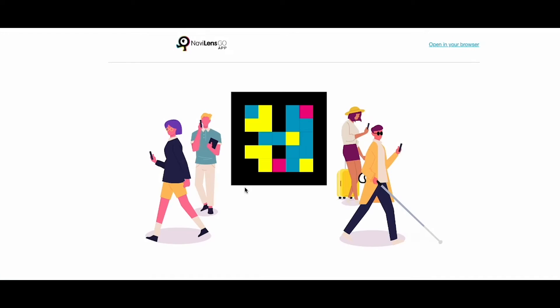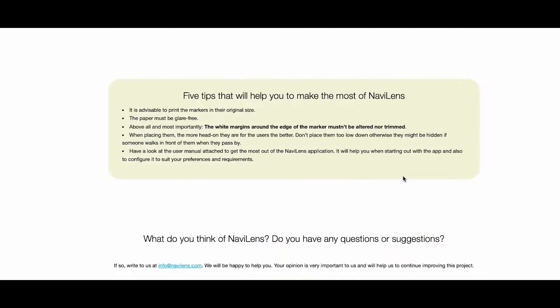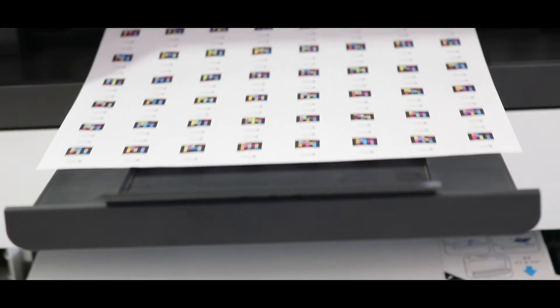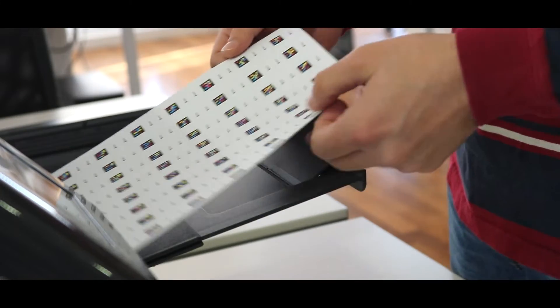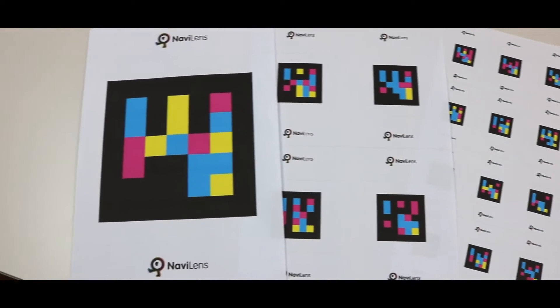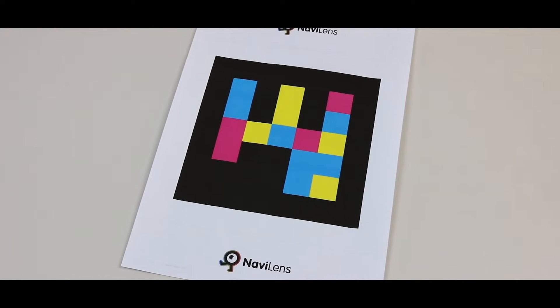You will receive your set of personal use codes via email. The email will include a pack of PDF files which contain NaviLens codes of different sizes ready to be printed and used. The first is a single PDF file with one A4 size code measuring 210 millimeters squared.